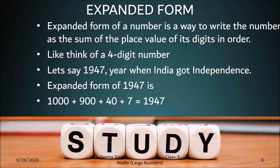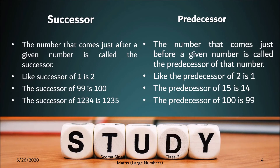The next topic is successor and predecessor. The successor is the number that comes just after a given number — that is, when we add 1 to a given number, the answer we get is its successor. For example, the successor of 1 is 2, the successor of 99 is 100, and the successor of 1234 is 1235.